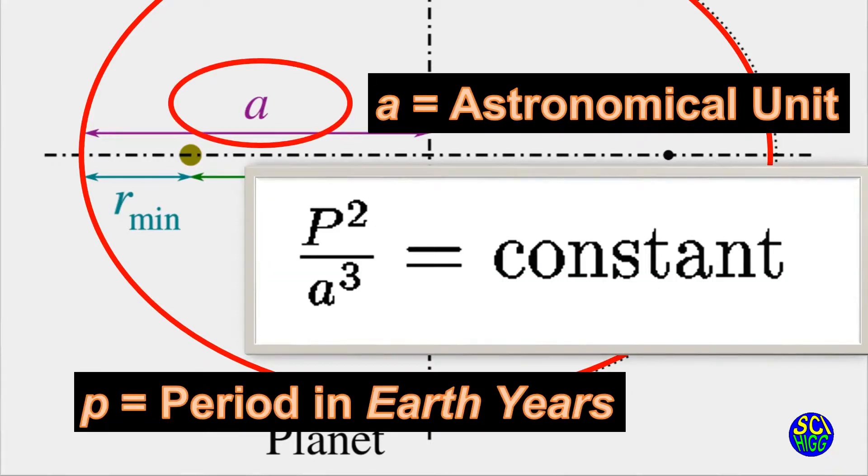Kepler's third law would compare these two measurements, the square of the number of years divided by the cube of the distance from the sun, that equals some sort of constant. And Kepler did not know what that constant was, but he was still able to develop this law that described what we see in nature.